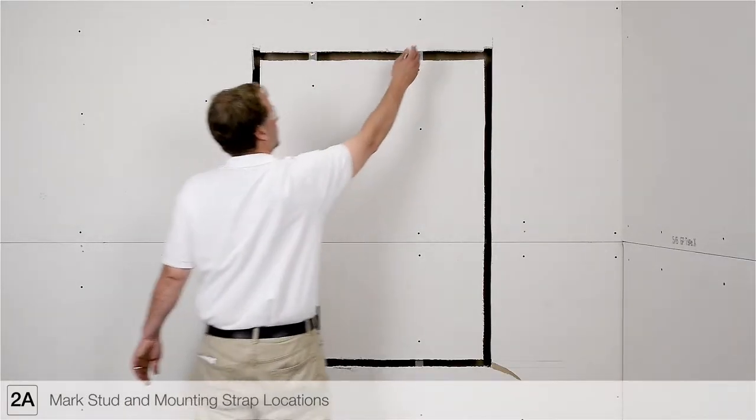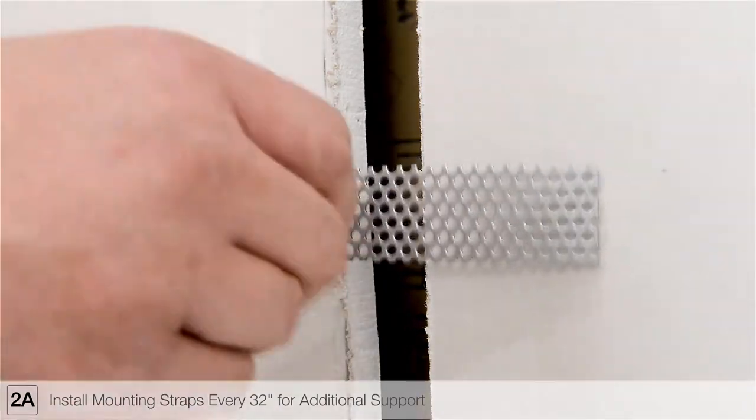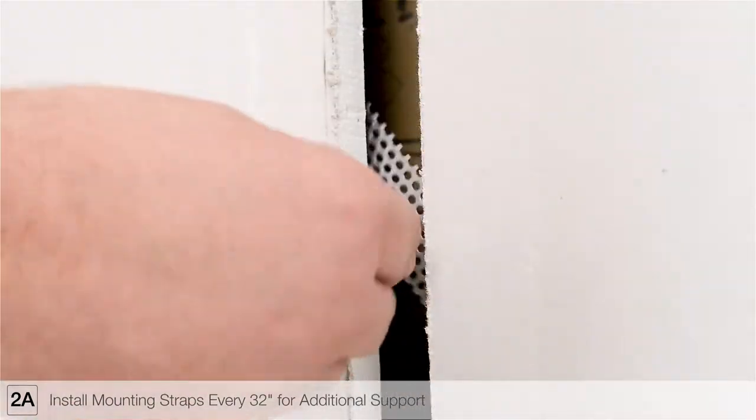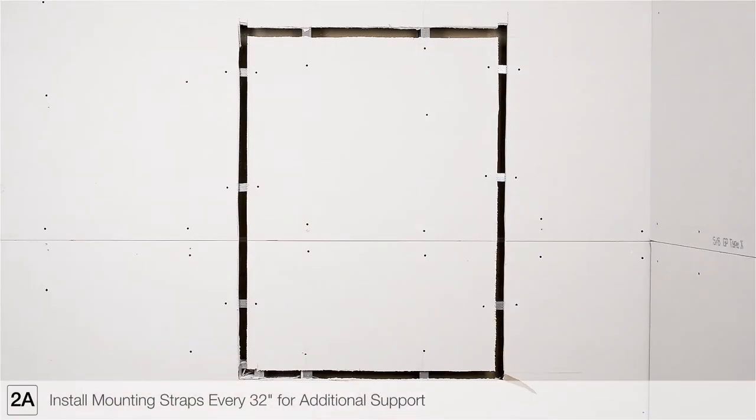Mark the stud and mounting strap locations. Install mounting straps every 32 inches along the installation area for additional support, where there is no stud or joist to support the channel.